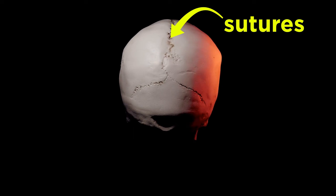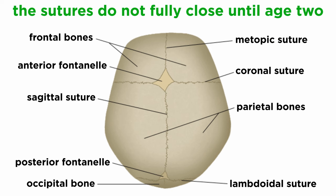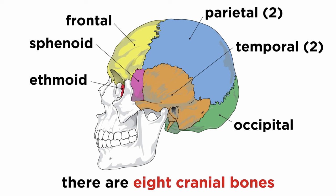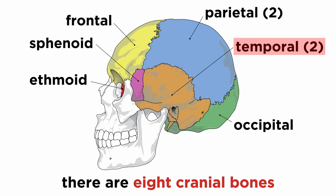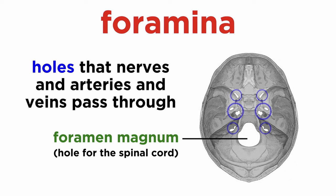The bones of the skull are held together by fibrous joints known as the sutures of the skull. These sutures do not fully close until age two in humans, which is why babies have a soft spot on their head that is effectively exposed brain. The largest sutures include the coronal suture, which joins the frontal bone with the parietal bone; the sagittal suture, which joins the two parietal bones; and the lambdoidal suture, which joins the parietal bone with the occipital bone. The bones of the brain case include the non-paired frontal, occipital, sphenoid, and ethmoid bones, and the paired parietal and temporal bones, for a total of eight cranial bones.